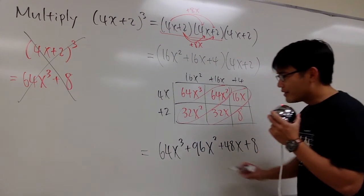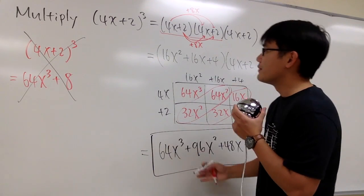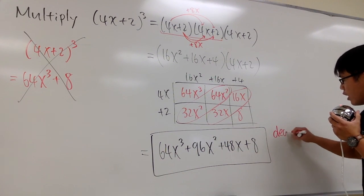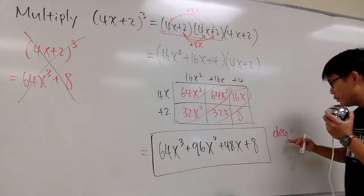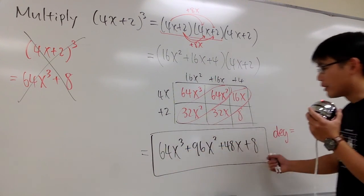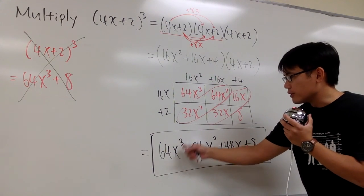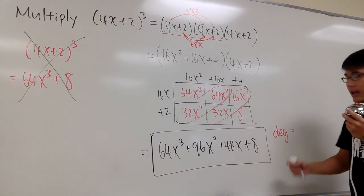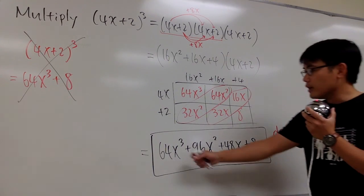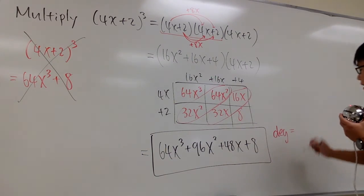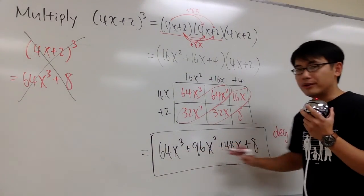This will be the final result that we have for this product. There are two vocabularies that we have to know. First, what's the degree of our resulting polynomial? Degree means that it's the highest power of x in the term of our resulting polynomial. Here we have x to the 3rd power, x squared, x to the 1st power, and this is like x to the 0 power. Degree is the highest power of x that we have, which in this case is x to the 3rd power, so the answer is 3.